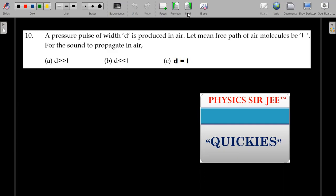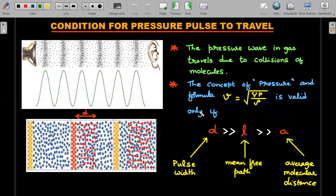The idea for the condition for the pressure pulse to travel comes from the fact that any pressure wave inside any gas travels due to collisions of molecules. Whether we take a single tone or single wavelength sound wave which is traveling, it is due to the extra excess pressure information that travels from one place to another place via collisions of gas molecules. But the concept of this state called pressure and the formula that we use for velocity of that sound wave, which is square root of gamma p by rho, is only valid if the width of that pulse...